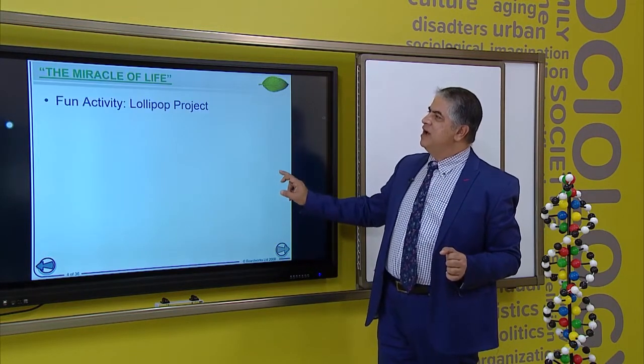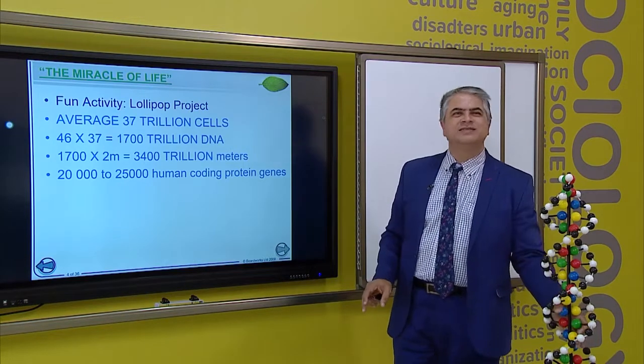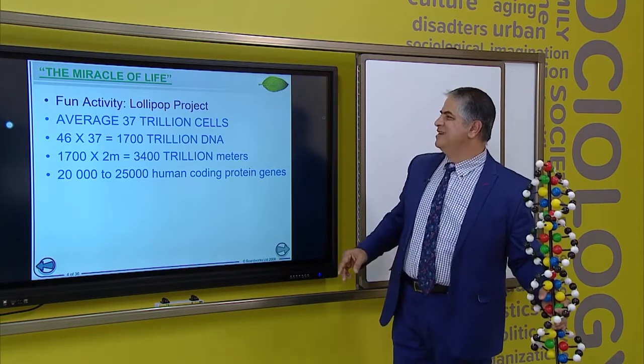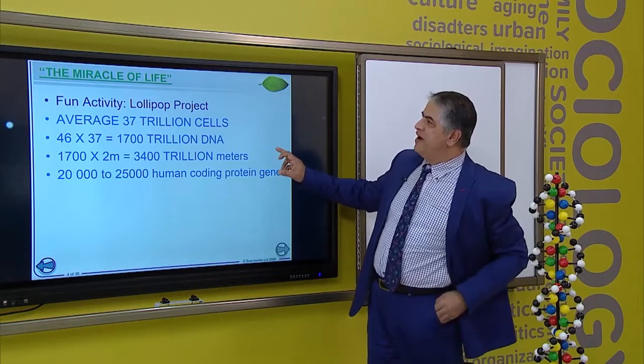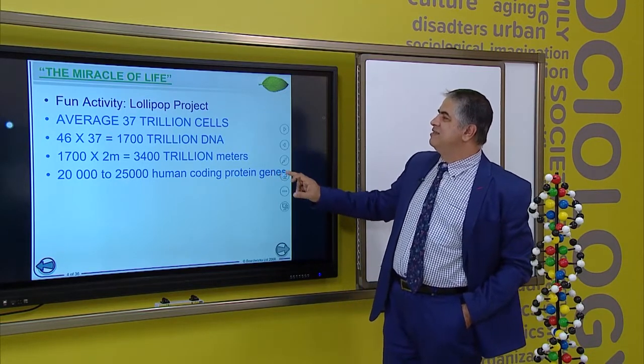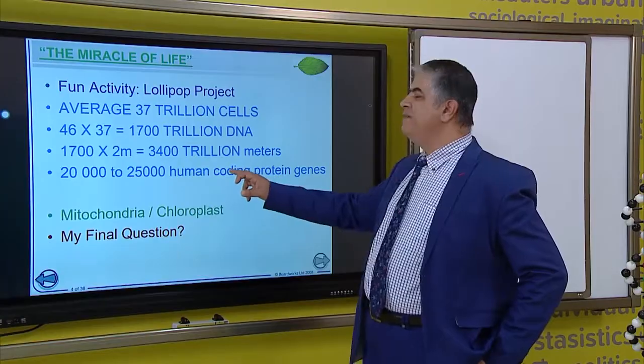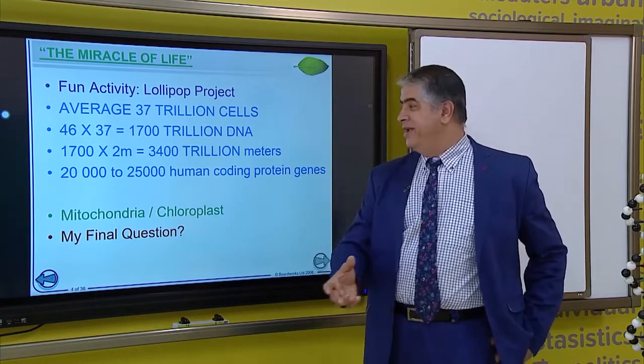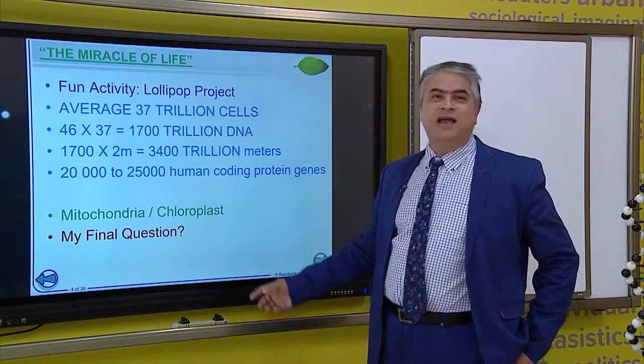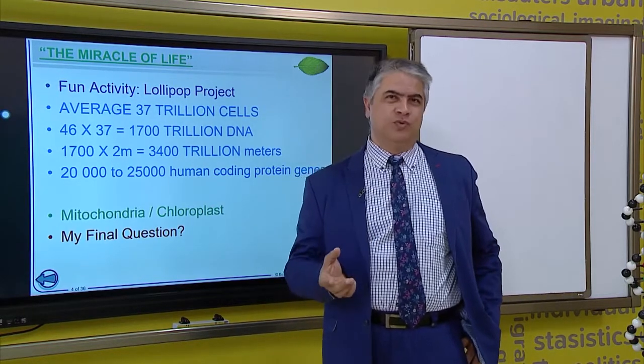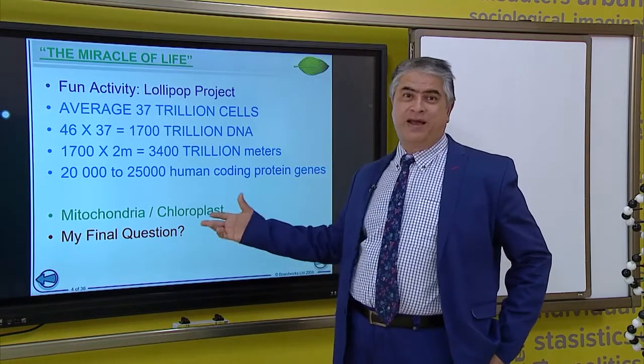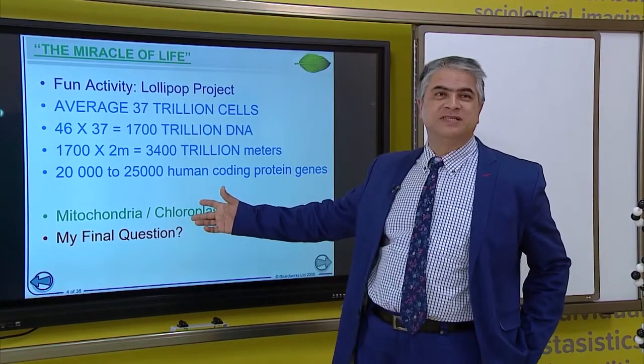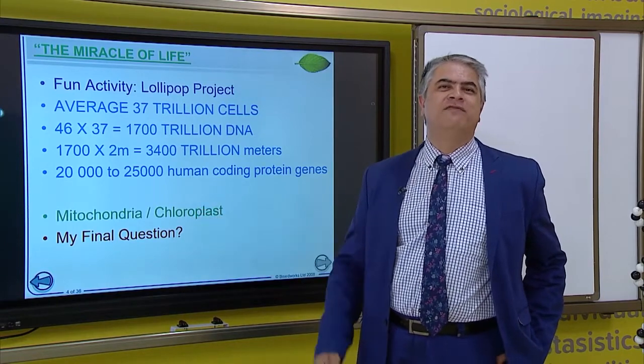At the end of this lesson, I think a fun activity would be to make this with lollipops. And we could all eat the project after that. So, this is the fun facts. There are 37 trillion cells, there are 25,000 human coding protein genes. The mitochondria has DNA. So does the chloroplast. And the final question that I would like to leave you with is, did this all happen by accident? Or is there a great divine creator who has designed this magnificent molecule? Thank you. Have a fabulous day.